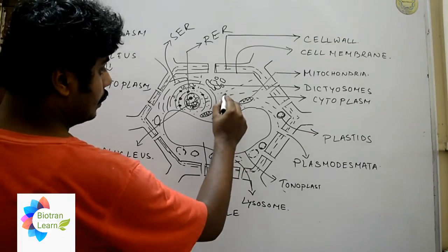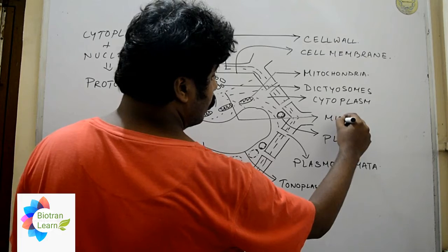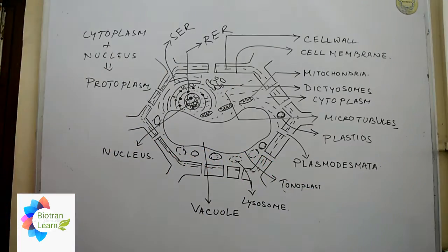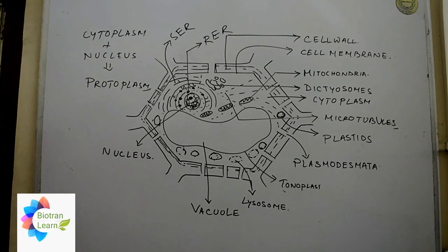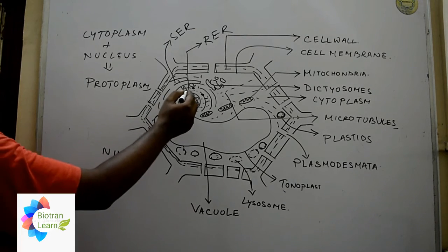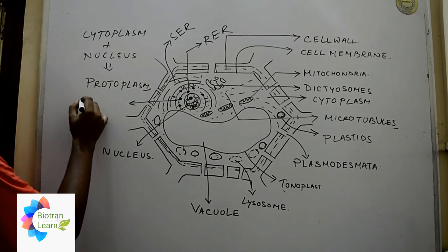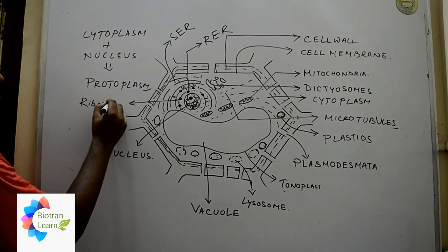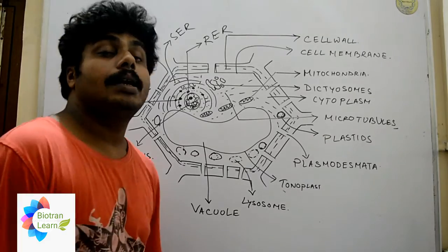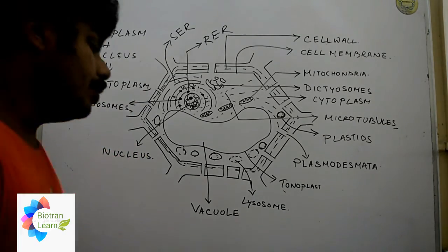These ray-like structures are known as microtubules, which hold the structure of the total cell. In the case of rough endoplasmic reticulum, we also have some ribosomes on it. This is all about a plant cell and how to draw it. These are the main organelles that differentiate a plant cell from an animal cell.